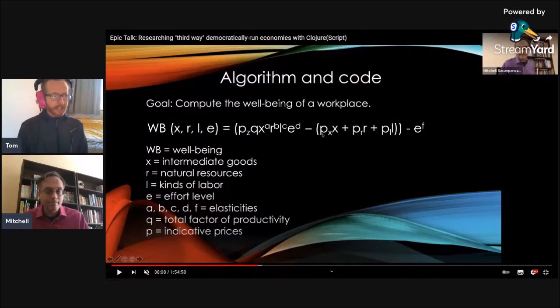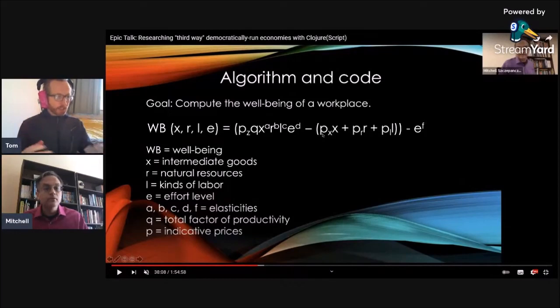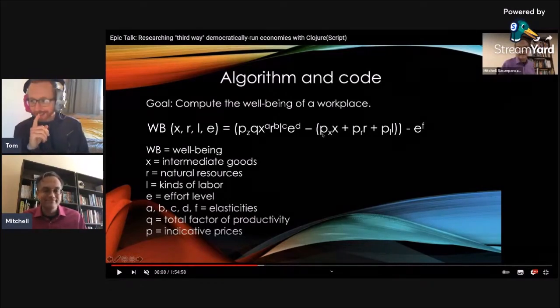Right. So a capitalist firm might use one of these production functions. They might want to estimate, if we try and produce so much, here are all our inputs, what do we expect to get out? And they'll use something like a production function for their planning purposes. And we're saying we're using this type of thing for our modeling. Okay, cool. Let's jump into the next bit then.